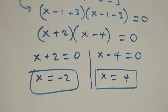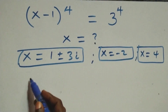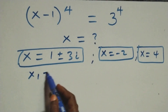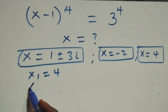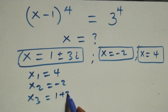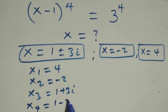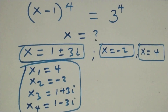Therefore, altogether we have four solutions for this problem: x₁ equals 4, x₂ equals minus 2, x₃ equals 1 plus 3i, and x₄ equals 1 minus 3i — two real solutions and two complex solutions.